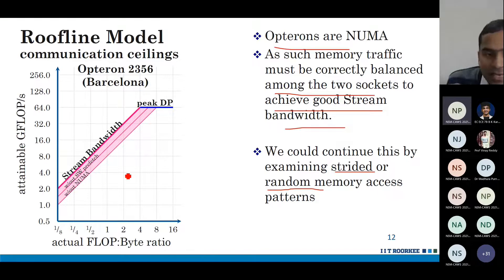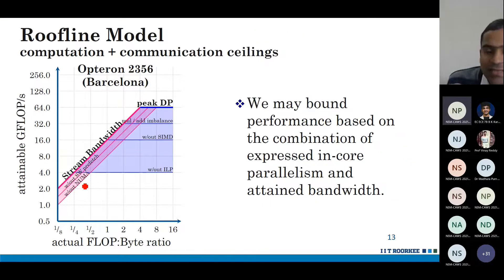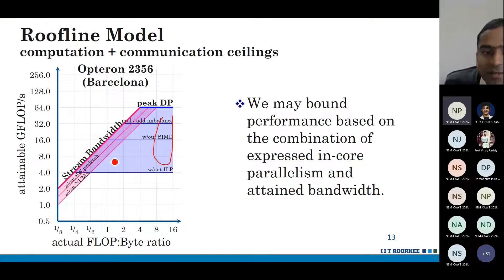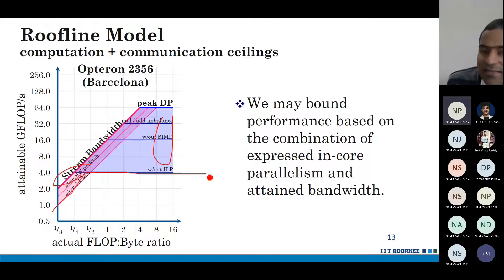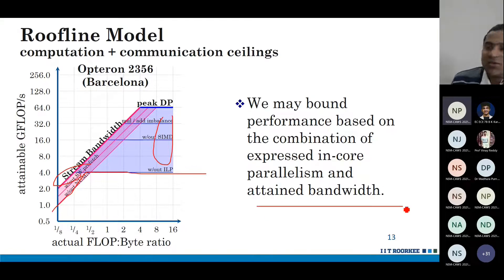In the worst case, you have both computation ceilings and communication ceilings — which is very realistic. So effectively your roofline model collapses to a very low performance level. All parallelism and bandwidth factors come into play, and effective memory bandwidth comes down greatly.